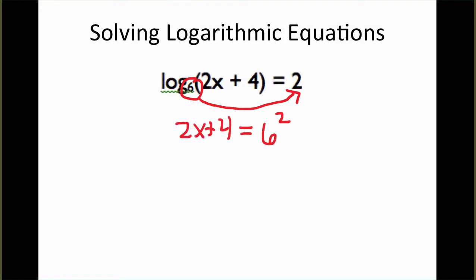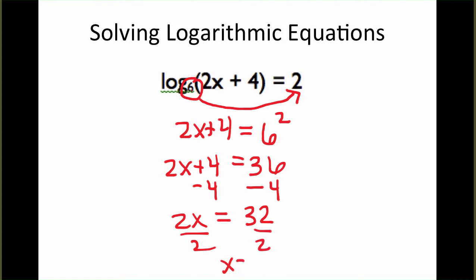So the base stays the same in the exponential as it was in the logarithm and then what the logarithm was equal to becomes the exponent. Here, to solve this, 6 squared is 36. And so if we simply subtract 4 from each side of the expression, we get 2x equals 32 divided by 2, x equals 16.